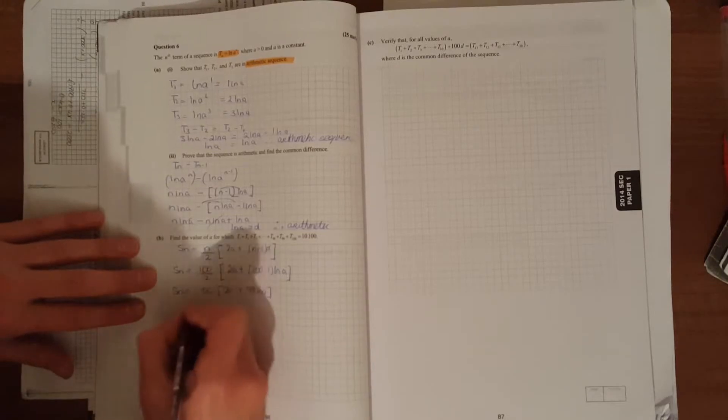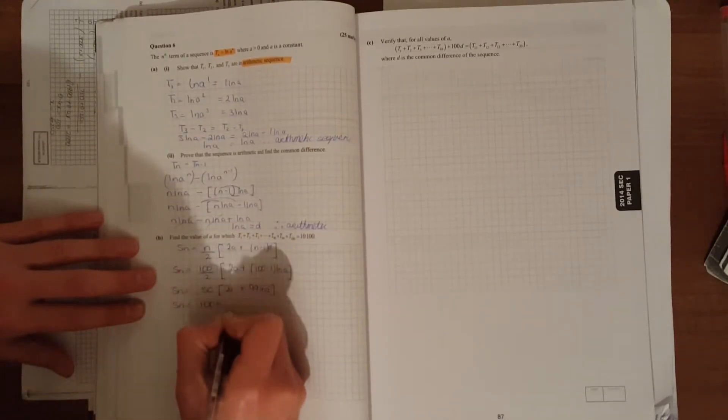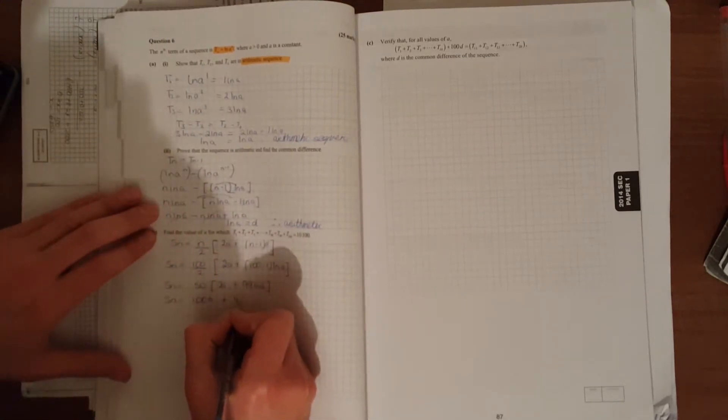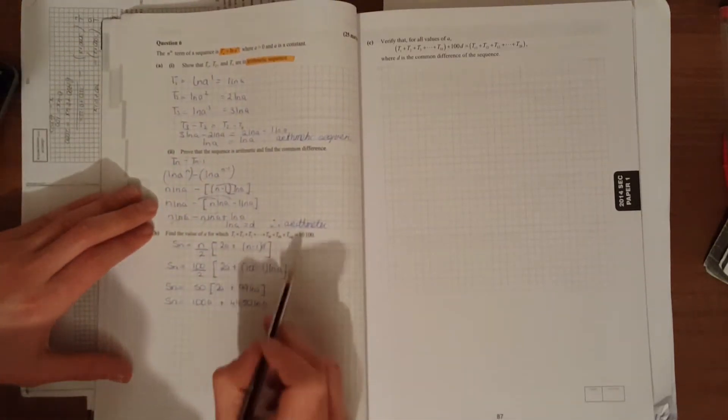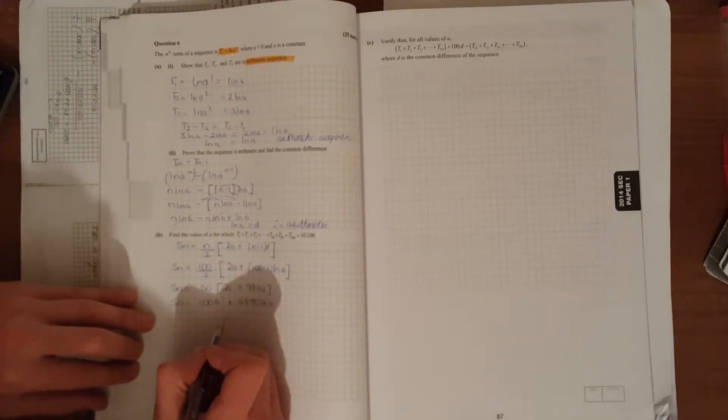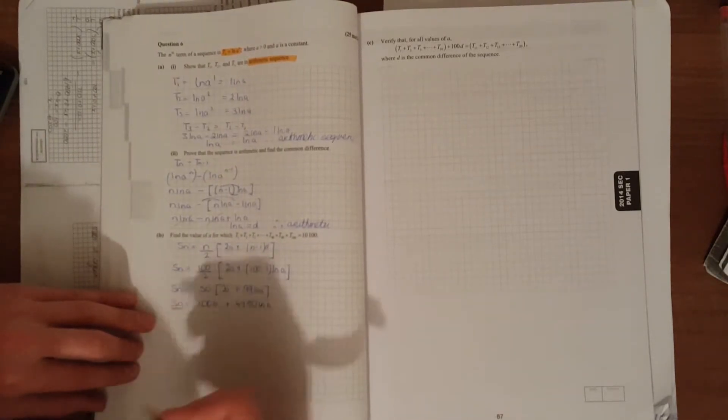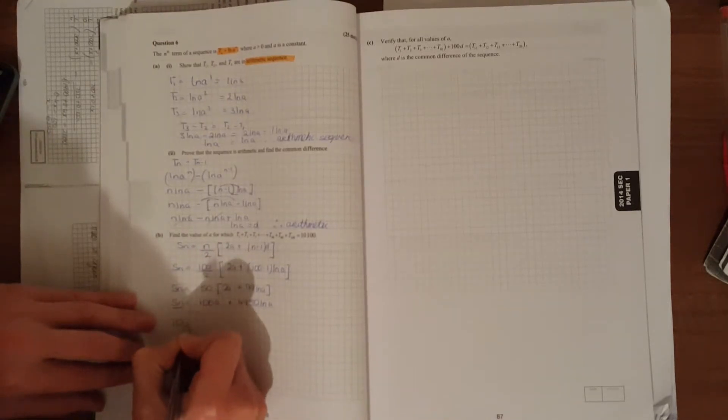Using the formula, 100 over 2 times [2·t1 + 99·d]. Simplify to 50 times [2·ln(a) + 99·ln(a)], which equals 10,100. So the sum of the first 100 terms is 10,100.